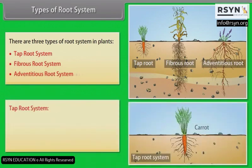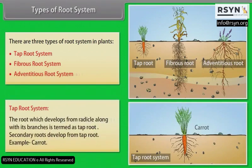Tap root system: The root which develops from the radicle along with its branches is termed as tap root. Secondary roots develop from the tap root. Example: carrot.